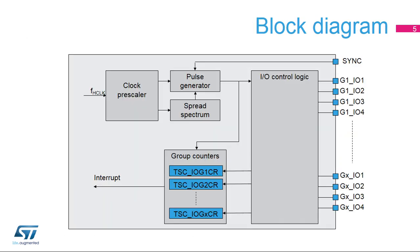To offer sufficient clock granularity, the TSC is directly clocked under the AHB clock. This clock is used by the spread spectrum block, while the clock feeding the pulse generator is reduced using a prescaler. GPIOs supporting touch sensing must be configured in alternate mode to connect them to the touch sensing controller. The sync input pin is used to synchronize the capacitive sensing acquisition with an external stimulus without CPU interaction. One counter per analog I/O group stores the acquisition result, and an interrupt can be generated upon end-of-acquisition or when an error is detected.